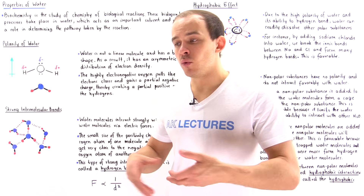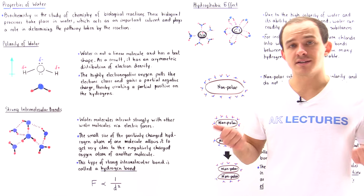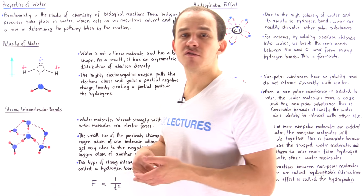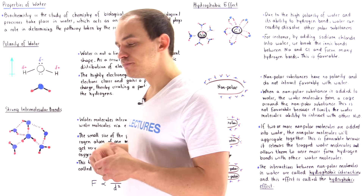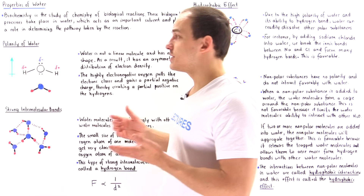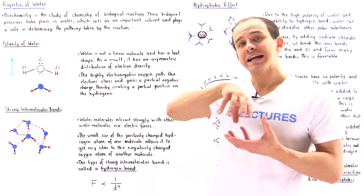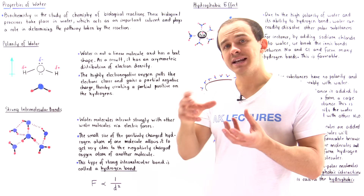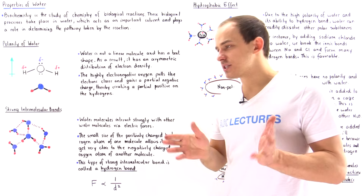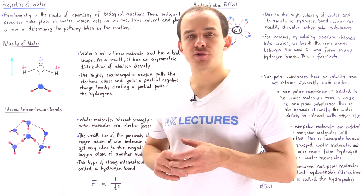For example, one biochemical process in our body, inside the cells of our body, is the biosynthesis of proteins. And as a result of the properties of water, that protein is able to actually obtain its final three-dimensional shape. And we'll discuss that in much more detail in a future lecture.